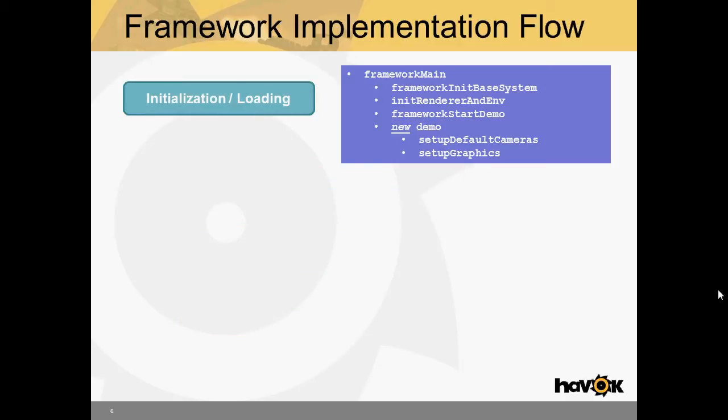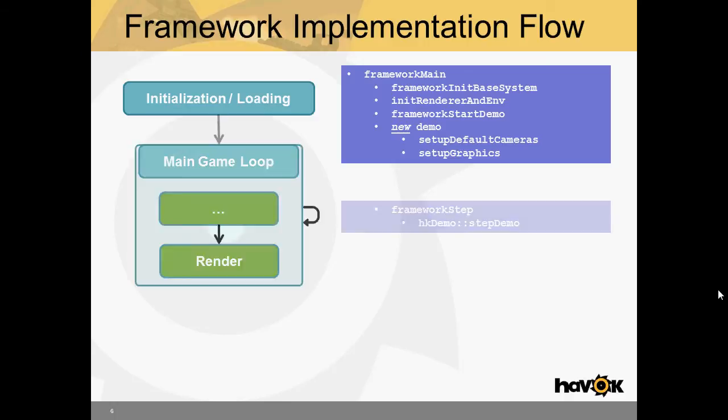So how is this actually implemented? Well, the initialization, everything starts out in FrameworkMain. And then from FrameworkMain, it initializes the base system. And then it initializes the renderer and the environment. Environment here being everything from the window to the command line arguments and so on. And then it calls FrameworkStartDemo. And depending on whether or not you pass anything on the command line, by default, if you didn't pass anything, it will start MenuDemo. Otherwise, if you pass something into the command line, it may start that demo specifically. So it creates a new demo. And then each demo is responsible to set up the cameras and set up the graphics.